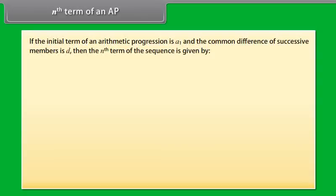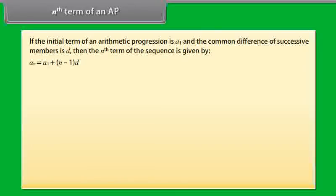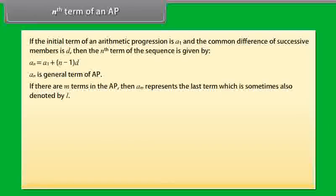The nth term of an AP. If the initial term of an arithmetic progression is A₁ and the common difference of successive numbers is D, then the nth term of the sequence is given by Aₙ = A₁ + (n-1)D. We know that Aₙ is also called the general term of the AP. If there are m terms in the AP, then Aₘ represents the last term, which is sometimes also denoted by L.